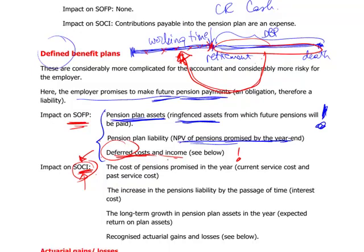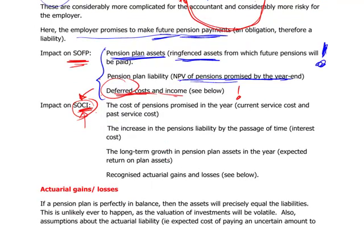Looking at the impact on the statement of comprehensive income, you expect to have the cost of pensions promised in the year — which you need to familiarize yourself with in terms of terminology — current service cost and past service cost. You should read the definitions prepared towards the end of this chapter. You will also have the increase in the pension liability by the passage of time.